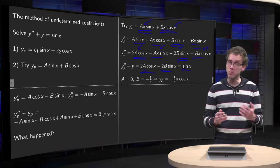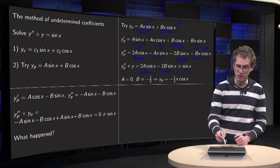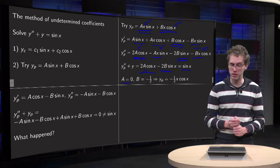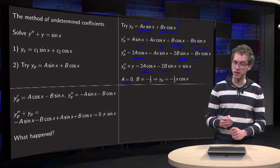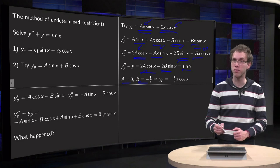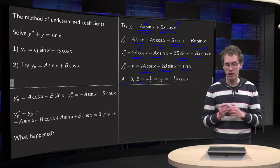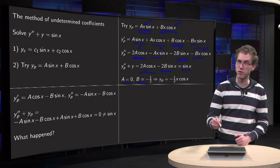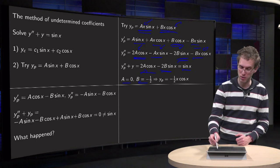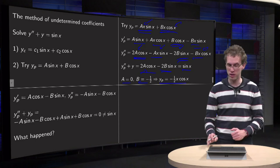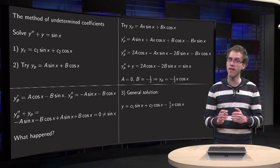That means A must equal zero, and -2B·sin(x) = sin(x), so B = -1/2. With B = -1/2 and A = 0, we have found our particular solution: y_p = -1/2·x·cos(x).